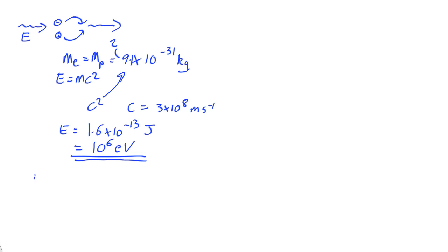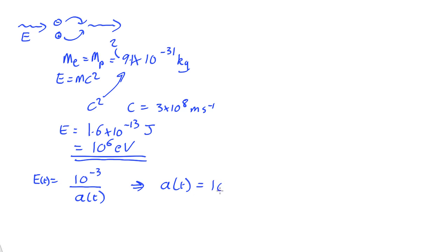We know that the energy of photons today is about 10⁻³ electron volts. The energy as a function of time is 10⁻³ electron volts today, and the energy at some time in the past is just that divided by the scale factor at that time. This implies that if we want to get an energy of 10⁶ electron volts, we need a scale factor A(t) = 10⁻⁹. So 10⁻⁹ over 10⁻³ gives you 10⁶. The universe was a billion times smaller in every dimension when this reaction took place than it is today.